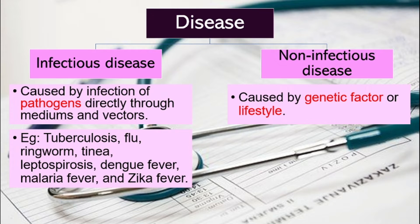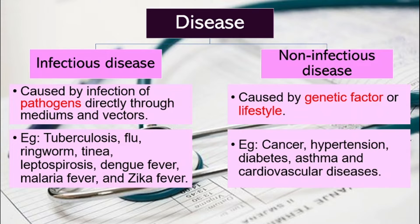Some examples of infectious disease are tuberculosis, flu, ringworm, tinea, leptospirosis, dengue fever, malaria fever, and zika fever. And for non-infectious diseases, we have examples like cancer, hypertension — that is high blood pressure — diabetes, asthma, and cardiovascular diseases.